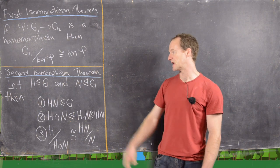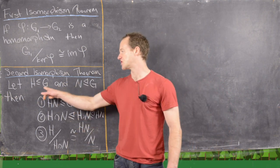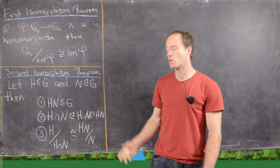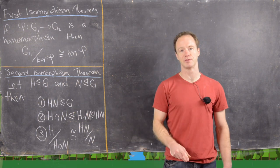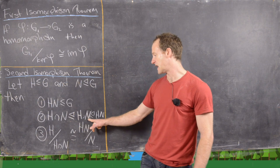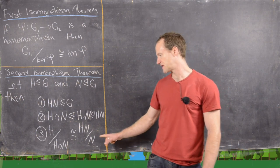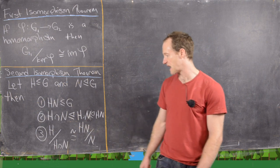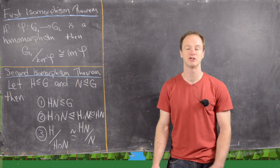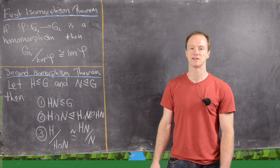The second isomorphism theorem is stated as follows. Let G be a group, H a subgroup of G, and N a normal subgroup of G. Then we have four things to prove: first, HN is a subgroup of G; second, H∩N is a subgroup of H and N is a subgroup of HN; and finally, the isomorphism H mod H∩N is isomorphic to HN mod N. You can think of this as cancelling the denominator, but you can only cancel down to an equivalence up to the intersection.